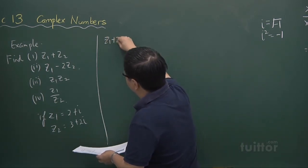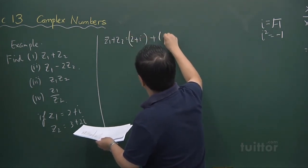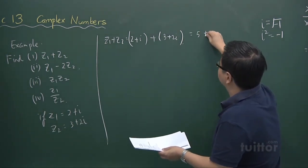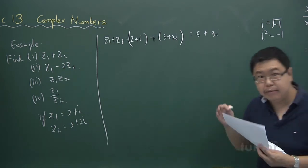So for z1 plus z2, it becomes 2 plus i plus 3 plus 2i. And that gives me 5 plus 3i. Adding the real parts together and adding the imaginary parts together.